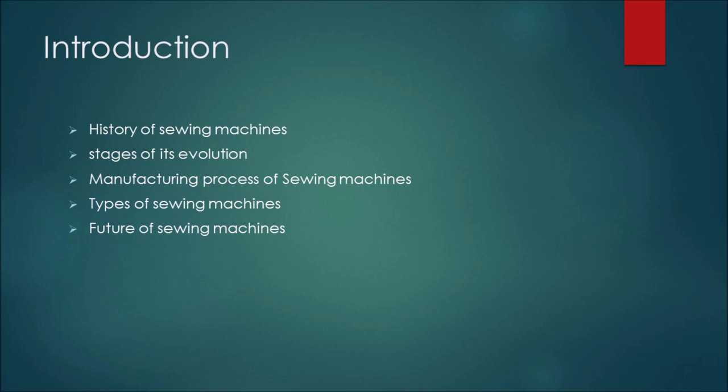But firstly, let's have a small introduction about our topic. Sewing machines have been an essential machine since ages, as they go into production of many products as clothes, fabrics, curtains, and many other things. Sewing machines are used to sew fabrics and materials together with thread.